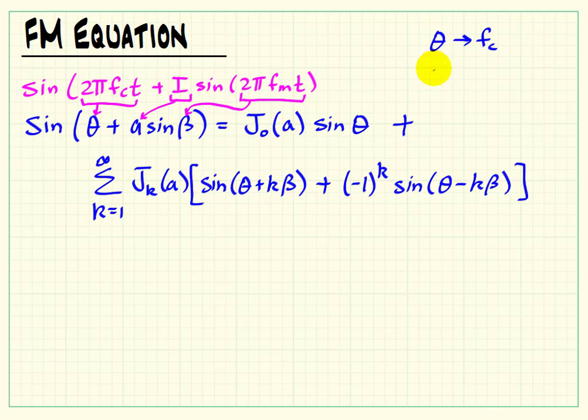Incidentally, if you're very observant in the pink equation, I should have had a closing right parentheses on the whole thing. You can imagine that that's there. So we now have a correspondence: theta corresponds to our carrier frequency, beta is the modulation frequency, A corresponds to I.